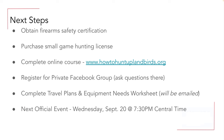Next steps, regardless of whether you're going to the camp or not: make sure you obtain your firearm safety certificate; purchase a small game hunting license from the Minnesota DNR; complete the online course at howtohuntuplandbirds.org; and register for the private Facebook group where the community is very helpful at providing feedback and ideas. For those attending the camp, we'll be sending out travel plans and an equipment needs worksheet — please complete that so we know your needs and when you plan to arrive and depart. The next official event will be next Wednesday at 7:30 PM.